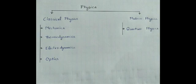Classical physics includes subjects like mechanics, thermodynamics, electrodynamics and optics. And modern physics includes subjects like quantum physics.